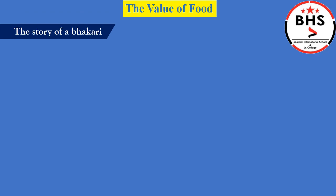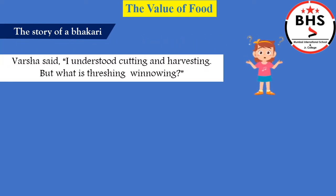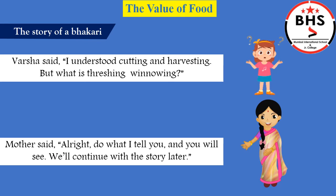The kids were a little confused. Varsha said, 'I understood cutting and harvesting, but what is threshing and winnowing?' Mother said, 'All right, do what I tell you and you will see — you will understand.' Mother said she will continue the story later.